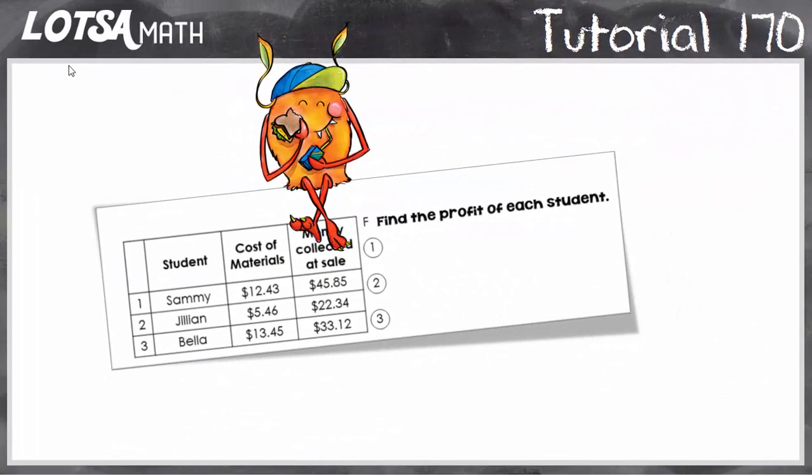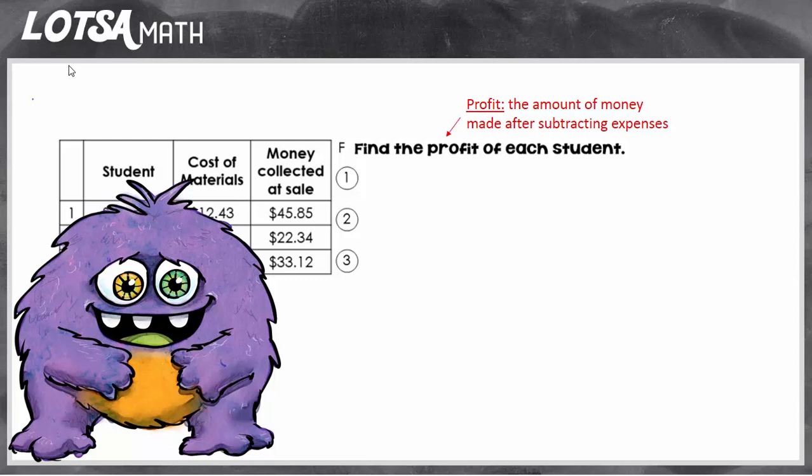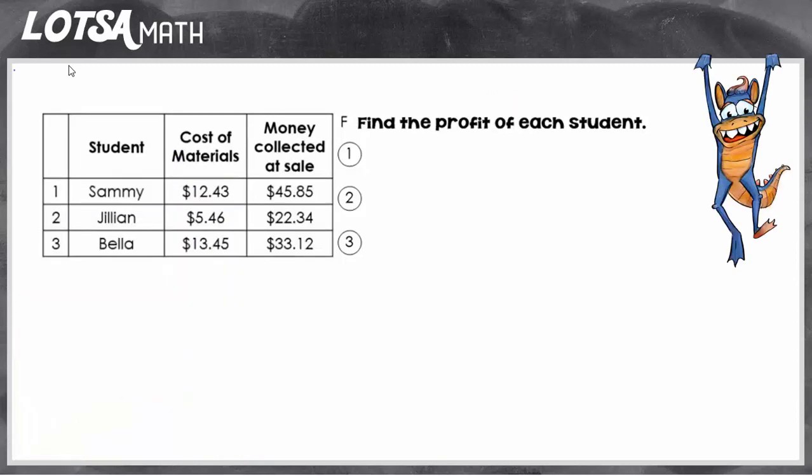For these questions, we're going to find profit, and profit is just the amount of money that you make after you subtract all the money that you spent to make that money. So let's look and see how we would do these examples.